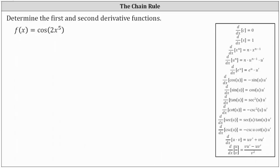Therefore we'll let u equal the inner function of two x to the fifth. So if u is equal to two x to the fifth, we can think of f of x as just cosine u and differentiate cosine u with respect to x to determine f prime of x.